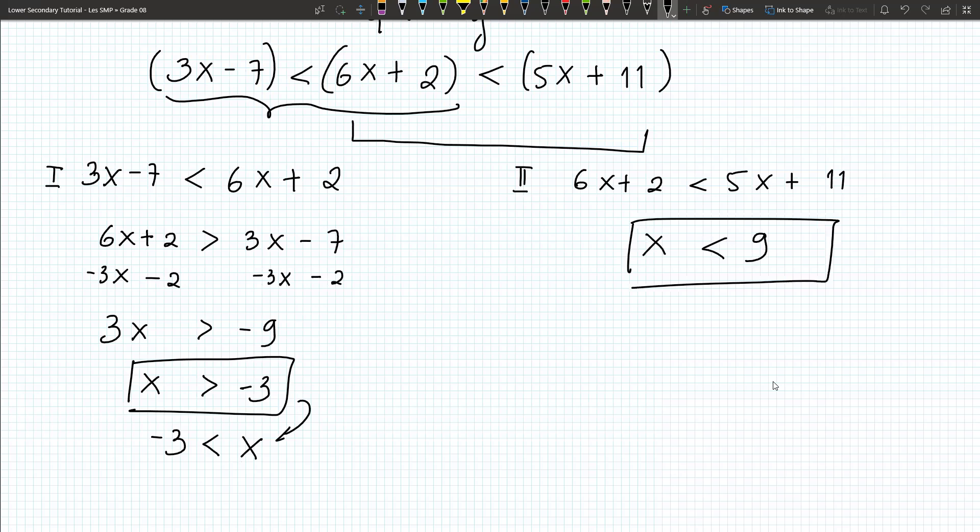If I combine them, combine the two answers, so what we have is this: x smaller than 9, but also bigger than negative 3. All right, so that's it, that's the answer.